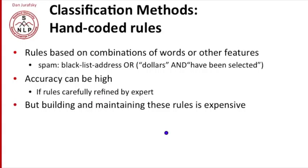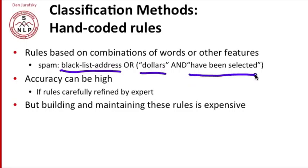The simplest possible text classification method is to use handwritten rules. For example, if we're doing spam detection, we might have a blacklist of bad email addresses, or look for phrases like 'millions of dollars' or 'you have been selected' — good indications of spam. If these rules are carefully refined by an expert, you can get high accuracy from handwritten rules. But in general, building and maintaining these rules is expensive. So although hand-coded rules are often used as part of a text classification system, we generally combine that with supervised machine learning.